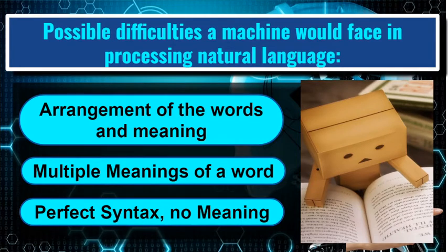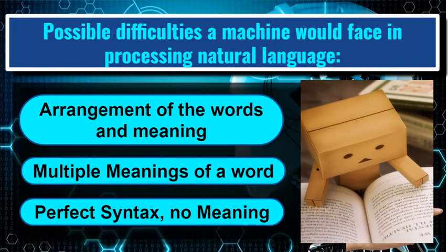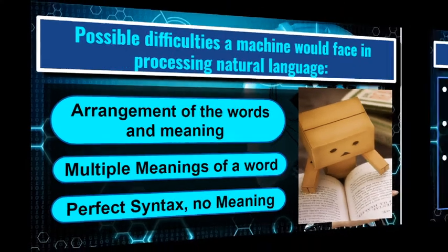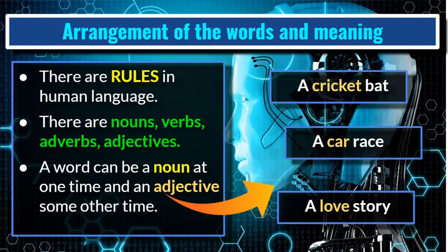These are the difficulties which a machine can face. First, arrangement of the words and meaning — meaning the grammar and syntax that the machine needs to understand. Second, multiple meanings of a word — when we use a word in different contexts it can give different meanings. Third, perfect syntax but no meaning — this also happens when we write a grammatically correct statement but the statement makes no sense.